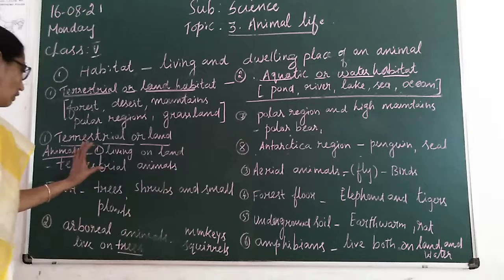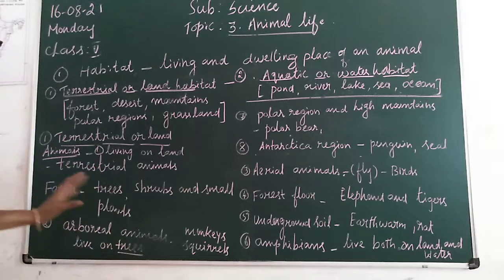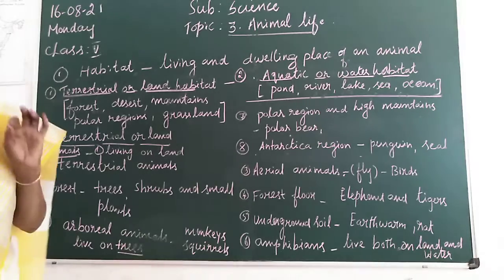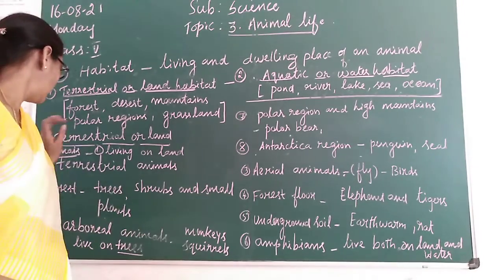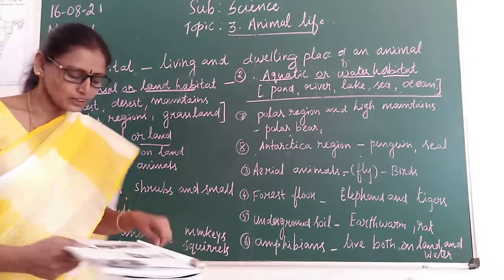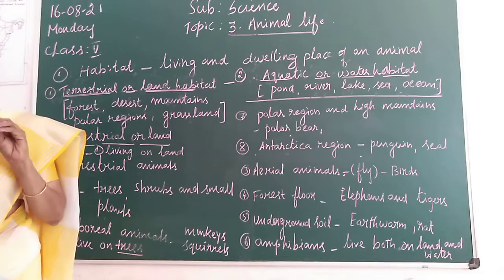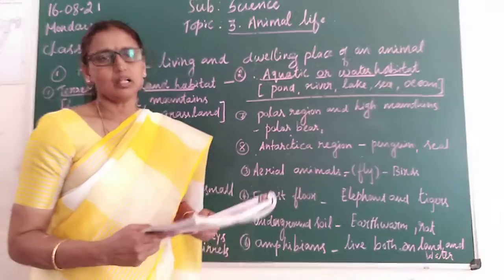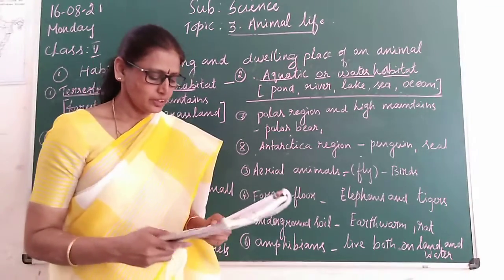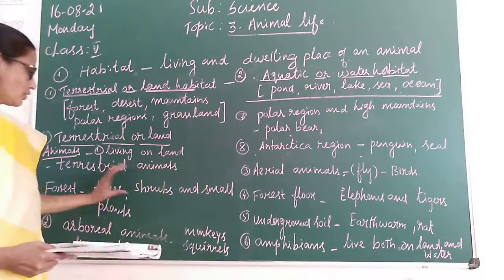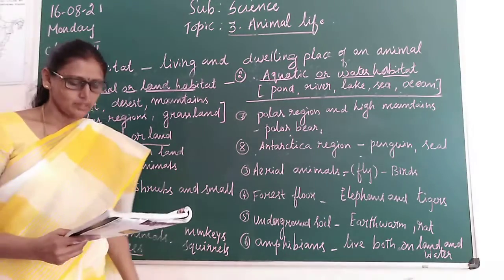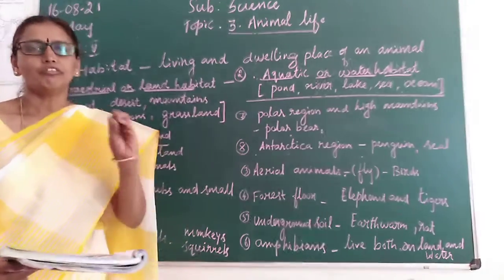Animals which live on land are called terrestrial animals. Forests are homes for many animals. Terrestrial area covered with vegetation containing trees, shrubs, and small plants is termed as forest.